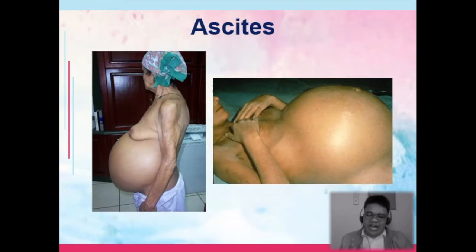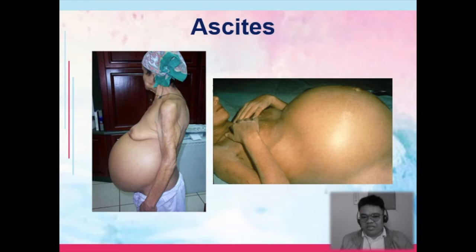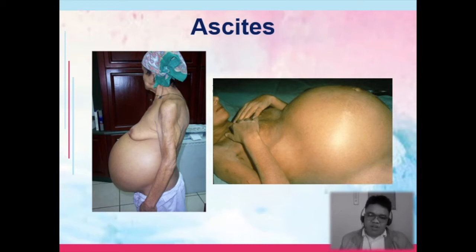If you're handling patients with ascites, you need to weigh the patient daily, and measure the abdominal girth at the same position — usually supine — with the tape measure placed at the level of the umbilicus. Abdominal girth monitoring helps with fluid status monitoring of the patient.